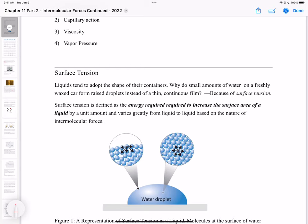First, let's talk about surface tension. Why does water form droplets instead of a continuous film when you see droplets on a waxed car? The answer is surface tension, which is the energy required to increase the surface area of a liquid by a unit amount.